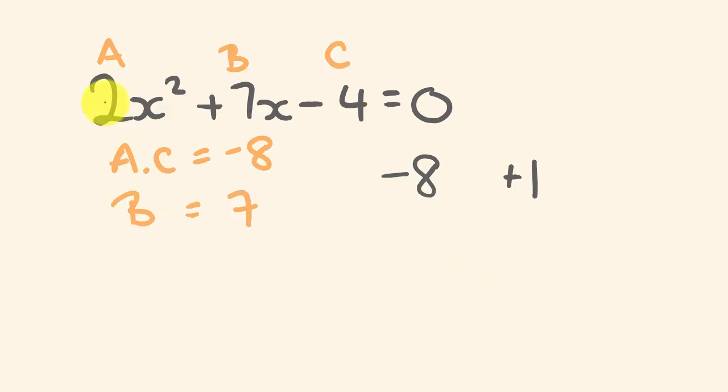Last of all, we're just going to put this over the coefficient A here. Okay, the very first one here. Divided by 2, divided by 2. And this gives us our two values for x. What x could equal? Well, x could be equal to negative 8 over 2. So negative 8 divided by 2 is negative 4. Or x could be also equal to positive 1 over 2, which is a half.